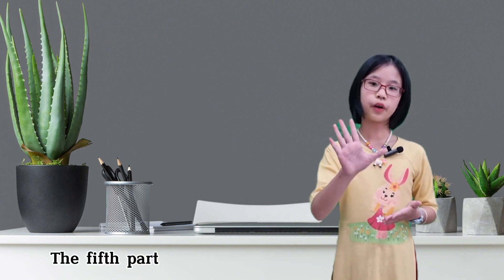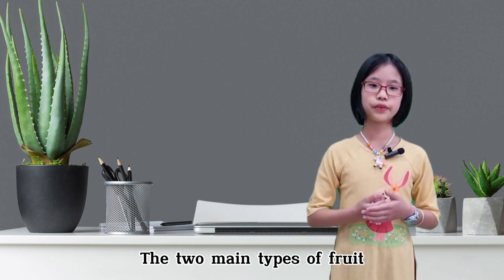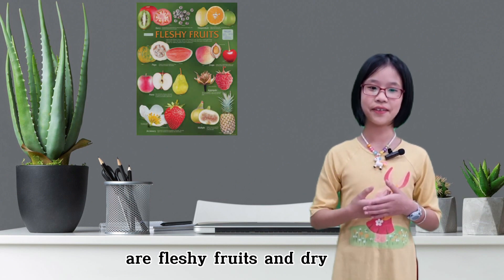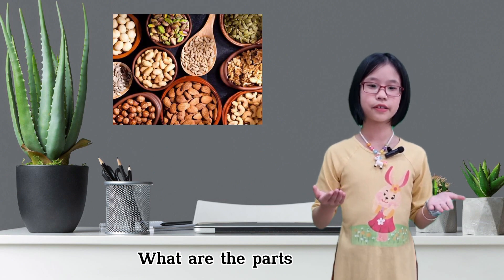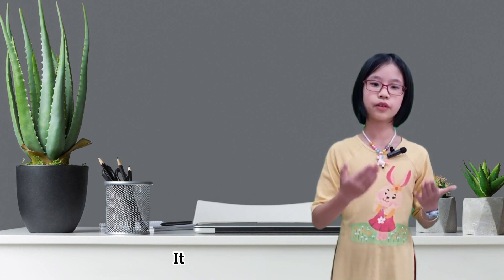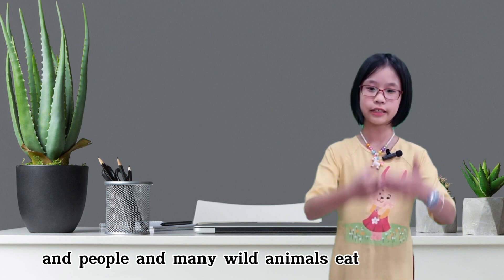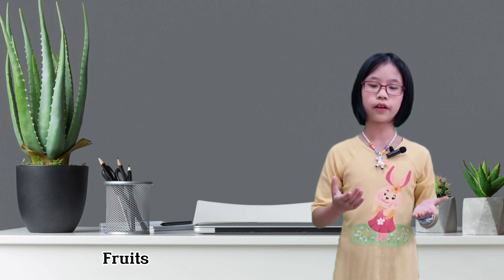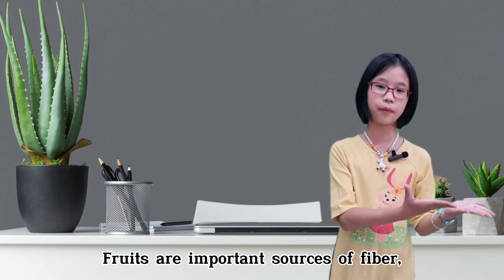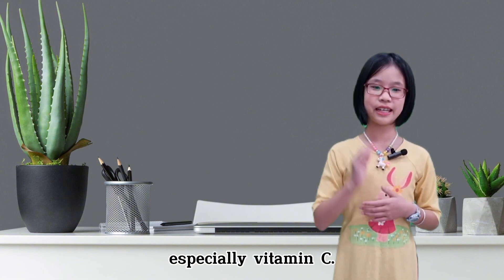The fifth part we're going to talk about are fruits. The two main types of fruits are fleshy fruits and dry fruits. The parts of a fruit are the pericarp and seeds. The fruit has two functions: it protects the seeds, and people and many wild animals eat fresh fruits. Fruits are important sources of fiber, minerals, and vitamins, especially vitamin C.